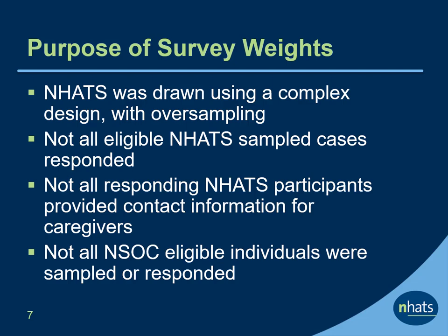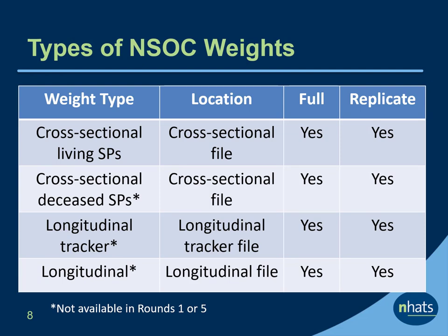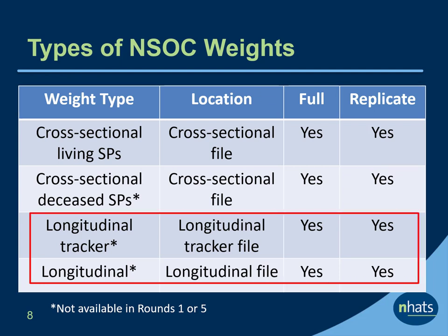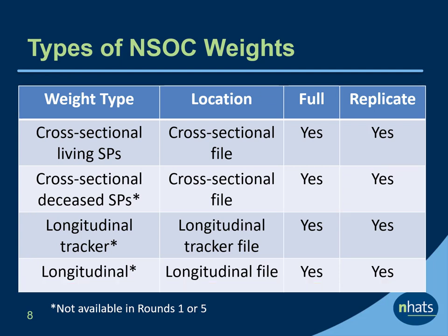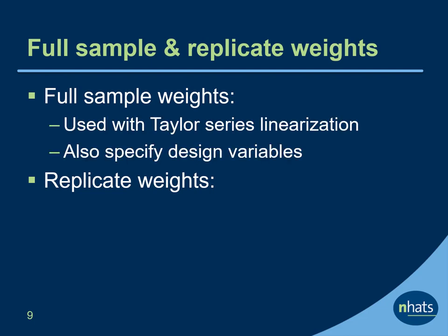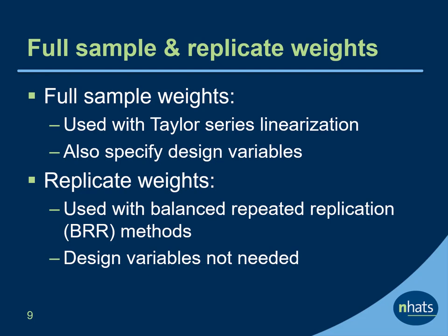Let's take a look at the different types of weights provided. Cross-sectional weights have been created for every round of NSOC. In addition, starting in round seven, NSOC has produced cross-sectional weights for end-of-life caregivers and longitudinal tracker and longitudinal weights for caregivers interviewed in the prior round. For each type of weight, two types have been produced: full sample weights and replicate weights. When Taylor series linearization estimation methods are used, the full sample weights should be specified together with survey design variables. When replication methods such as the balanced repeated replication method are used, the replicate weights are specified. Note that survey design variables are not needed with replicate methods.